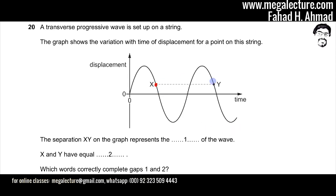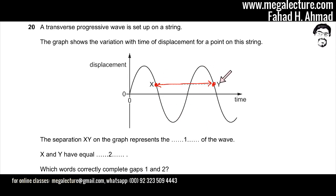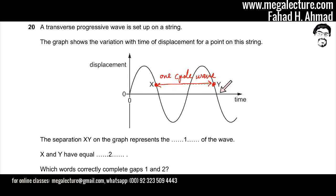There is a separation between point x and point y, and it states what that separation represents. If you look carefully, this point and this point are exactly the same point — it's exactly after one cycle that the wave repeats at y. So this is basically just one cycle of a wave, or you could call this a wavelength, but you also have to note what this axis is — this axis is the time axis.